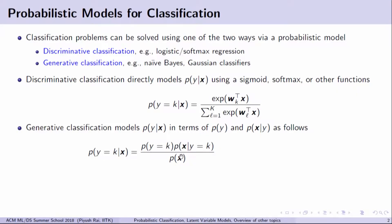If we have access to P(y) and P(x|y), we can use Bayes' rule to compute P(y|x), which is P(y) times P(x|y) divided by P(x). This is a two-step procedure: we first estimate P(x|y) and P(y), then combine using Bayes' rule. In contrast, discriminative classification directly defines P(y=k|x) using the softmax or sigmoid function. That is the key difference between discriminative and generative classification.